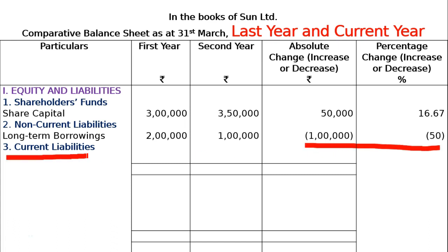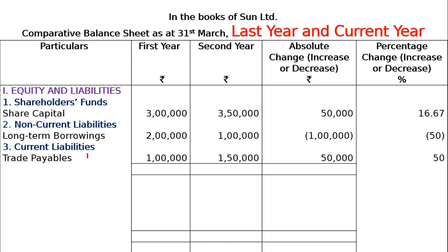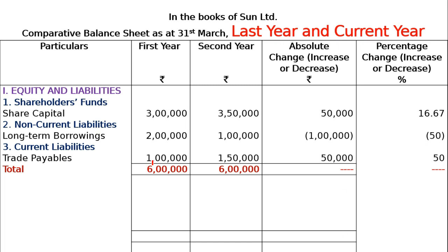Then comes Current Liabilities. Under Current Liabilities, Trade Payables: first year is Rs. 1 lakh, second year is Rs. 1,50,000. So 1,50,000 minus 1,00,000 = Rs. 50,000, and percentage change = 50,000 divided by 1,00,000 = 50%. Then calculate the total — first year total is Rs. 6 lakhs and second year total is also Rs. 6 lakhs — so the absolute change is zero and the percentage change is also zero (nil).